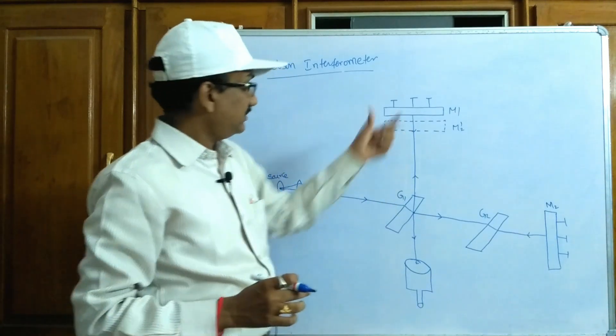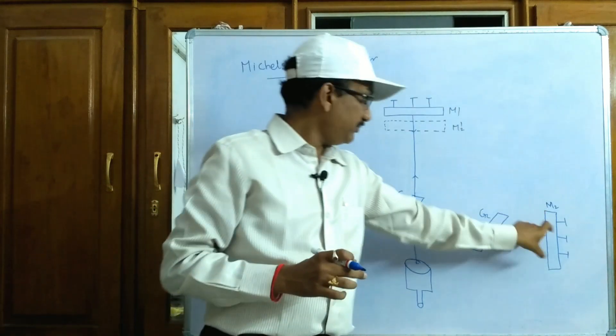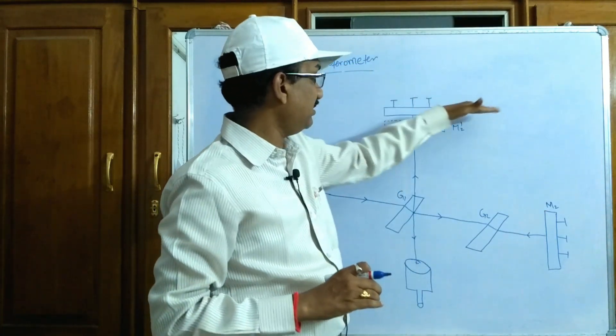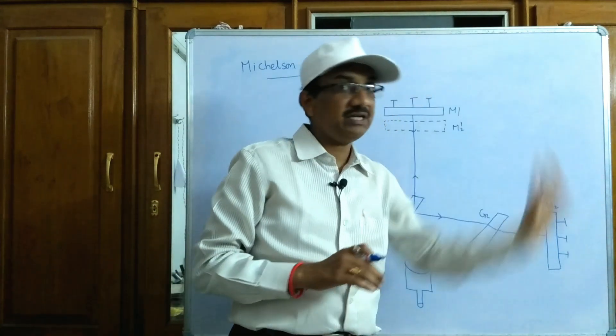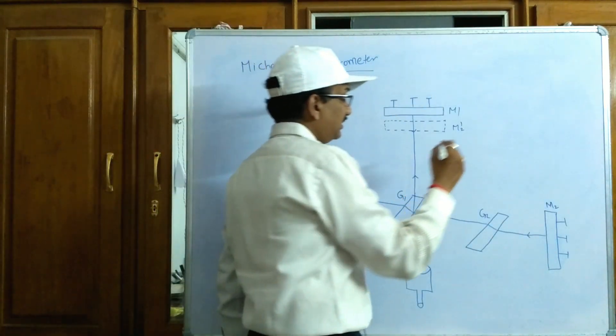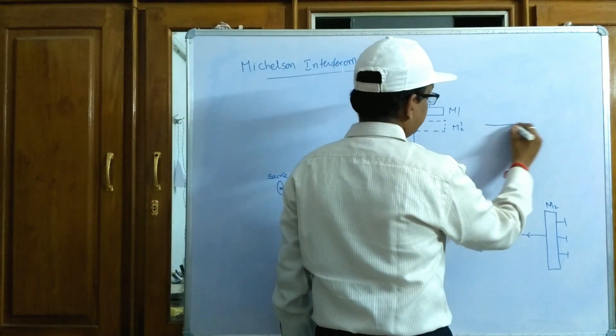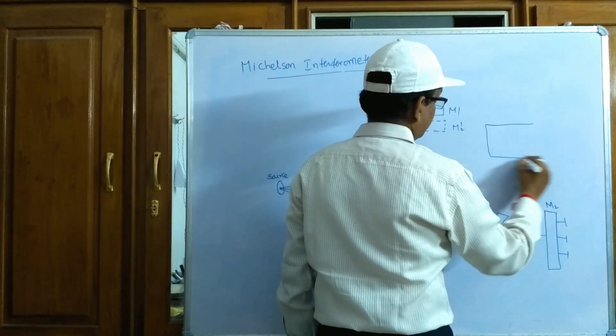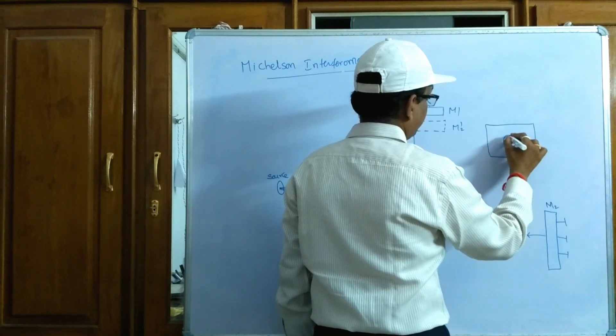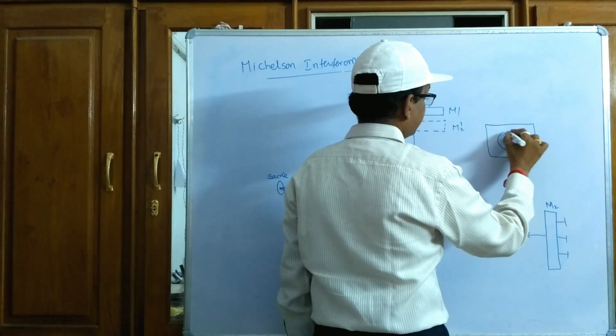The condition is, if M1 and M2 are perpendicular to each other. That means, M1 is along the x-axis and M2 is along the y-axis. Then they give circular fringes. They give circular fringes like this. It produces circular fringes.